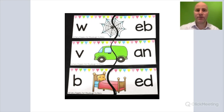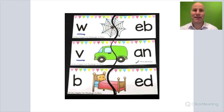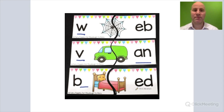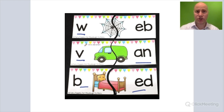So in web, the onset is the W, the rhyme is EB. In van, the onset or initial sound is V, the rhyme is AN. In bed, the initial sound is B, the rhyme is ED. This activity uses basic CVC words to practice isolating specific sounds — the initial sound in a word — so it is a phonemic awareness activity.